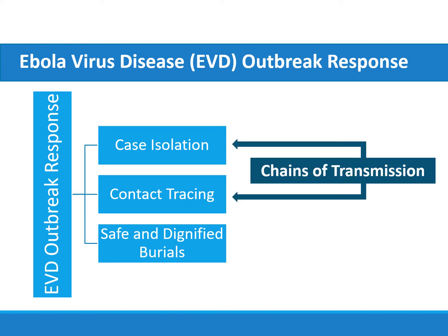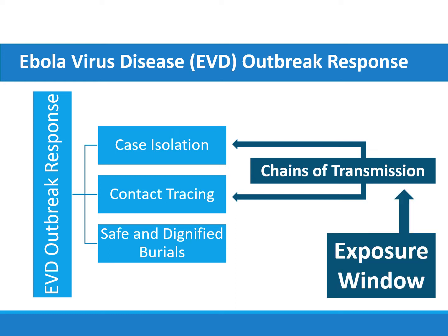Therefore, it is critical to establish clear chains of transmission in order to best target resources, improve strategies used to isolate those infected, and identify those who may be infected through contact tracing. Estimating the period of time when a person likely became infected with the virus, also referred to as the exposure window, allows investigators to more accurately establish chains of transmission.